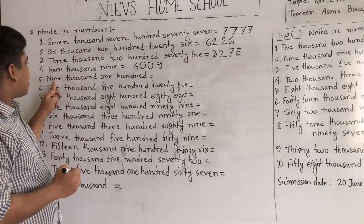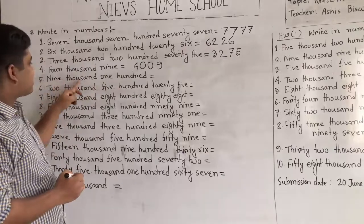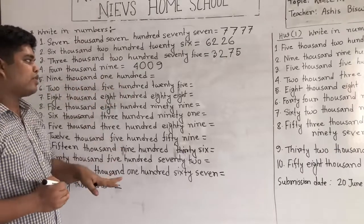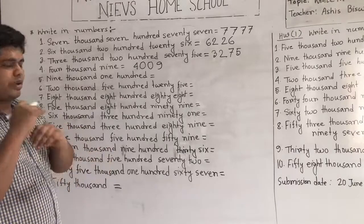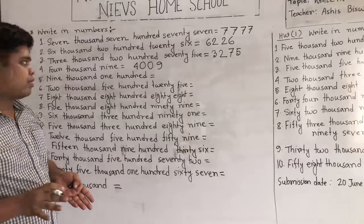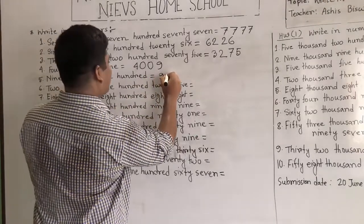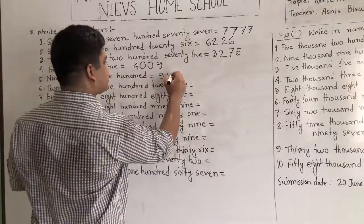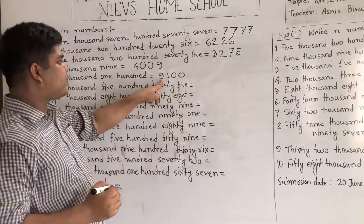Our next number is 9,100. Here the thousands place is present and hundreds place is present, but the tens place and ones place are absent. For this reason, tens and ones places will be given the number 0. So we write 9,100, and the tens and ones places are 0. It is read as 9,100.